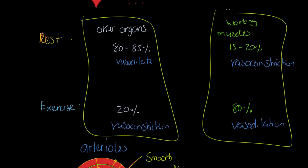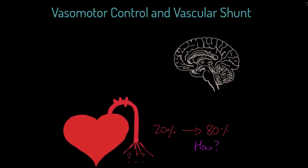So arterioles and pre-capillary sphincters are how we achieve this redistribution. Now, why did I have a brain at the top? The point about the brain is a very simple one. We have what's referred to as a vasomotor control centre - we'll call it the VCC - and it is positioned in your medulla oblongata.